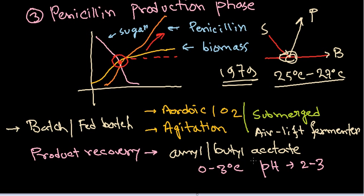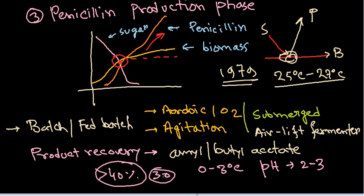An important point: nowadays more than 40 percent of the penicillin produced is used for the synthesis of semi-synthetic penicillin, since natural penicillin is required as a starting material for semi-synthetic variants. Only approximately 30 percent is used as general medicine for humans, and about 10 to 15 percent is used for veterinary purposes.